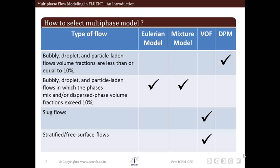Let us start with the first flow regime: bubbly, droplet, and particle-laden flows. For the same flow regime, but where the disperse phase volume fraction is more than 10%, we cannot use the Eulerian-Lagrangian approach and hence we have to use the Eulerian-Eulerian approach. For such flows, the Eulerian model or the mixture model is applicable.